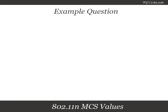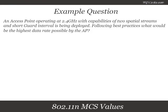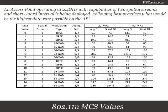Now let's look at an example question. An access point operating at 2.4 GHz with capabilities of two spatial streams and a short guard interval is being deployed. Following best practices, what would be the highest data rate possible for the AP? Okay, let's break this down.